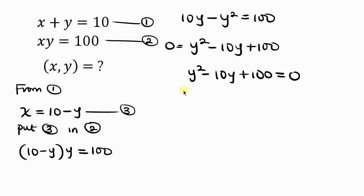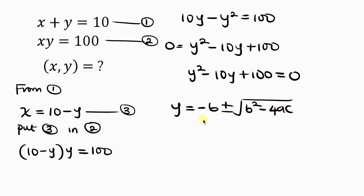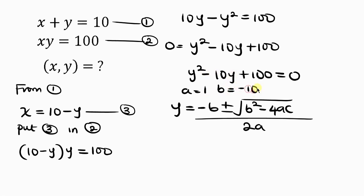We're going to use the quadratic formula to solve this. We're looking for y, so the quadratic formula is: y equals negative b plus or minus the square root of b squared minus 4ac, all over 2a. From our quadratic equation, a is the coefficient of y squared, which is 1; b is the coefficient of y, which is negative 10; and c is the constant term, which is 100.